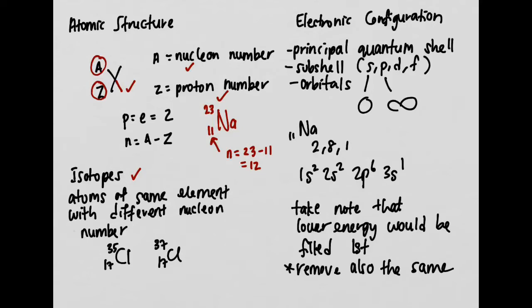For example, chlorine-35 and chlorine-37: the proton number is 17 for both, and the electron number is also 17 and 17. But the neutron numbers are different — 35 minus 17 gives 18, and 37 minus 17 gives 20. So isotopes have the same chemical properties because chemical properties depend on the number of electrons, but they have different physical properties.